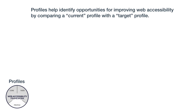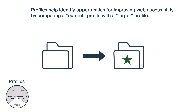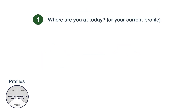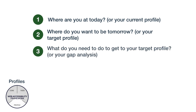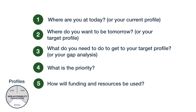Profiles help identify opportunities for improving web accessibility by comparing a current profile with a target profile. A profile can be simple or complex — it just depends on what the organization needs. It typically helps answer these questions: Where are you at today, or your current profile? Where do you want to be tomorrow, or your target profile? What do you need to do to get to your target profile, or your gap analysis? What is the priority? And how will funding and resources be used?